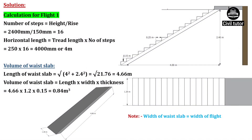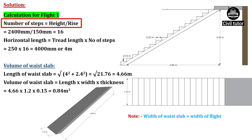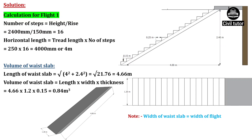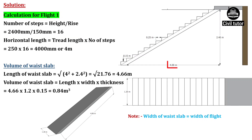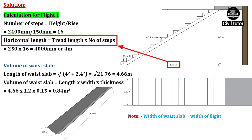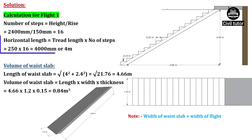First of all, we will do the calculations for flight 1, in which we will calculate the volume of waste slab and volume of all steps. The number of steps will be equal to height of flight divided by rise. Height of flight is given as 2400 mm and the rise is 150 mm, so the number of steps will be equal to 16. This horizontal length will be equal to tread length multiplied by number of steps. Tread length is 250 mm and number of steps is 16, so the horizontal length will be equal to 4 meter or 4000 mm.